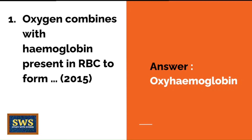Question 1: Oxygen combines with hemoglobin present in RBC to form what? This was a question from the 2015 board paper. The correct answer is oxyhemoglobin. This can obviously come as an MCQ with four options, but if you train your mind to think of the right answer without seeing the options, you would be two steps ahead of many other students.